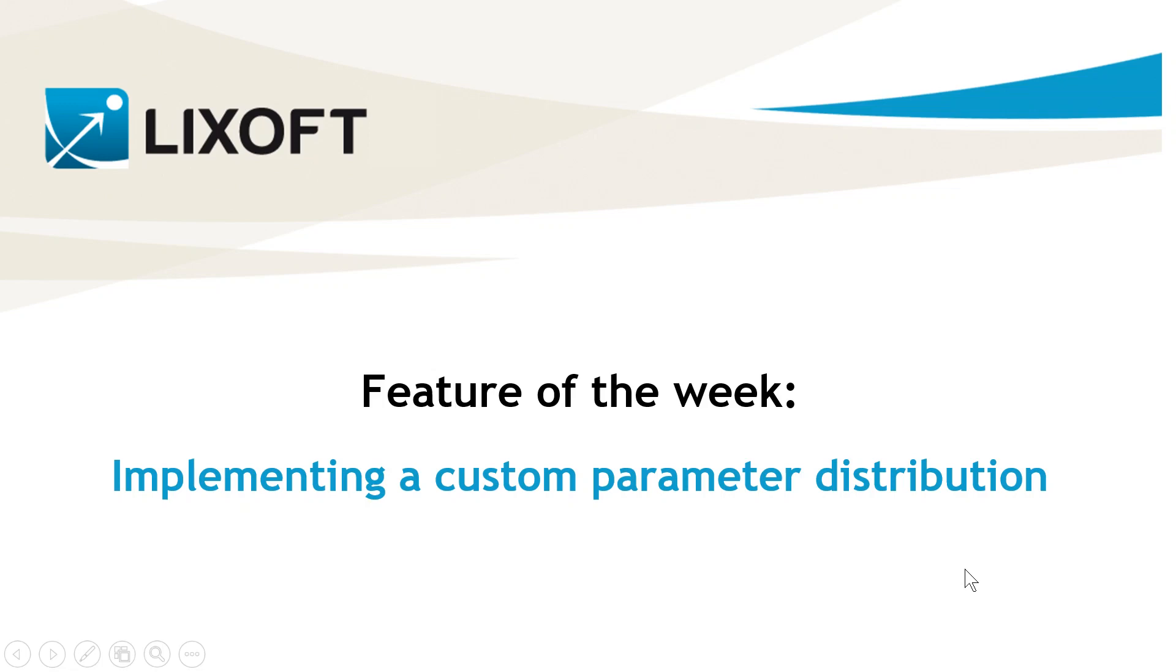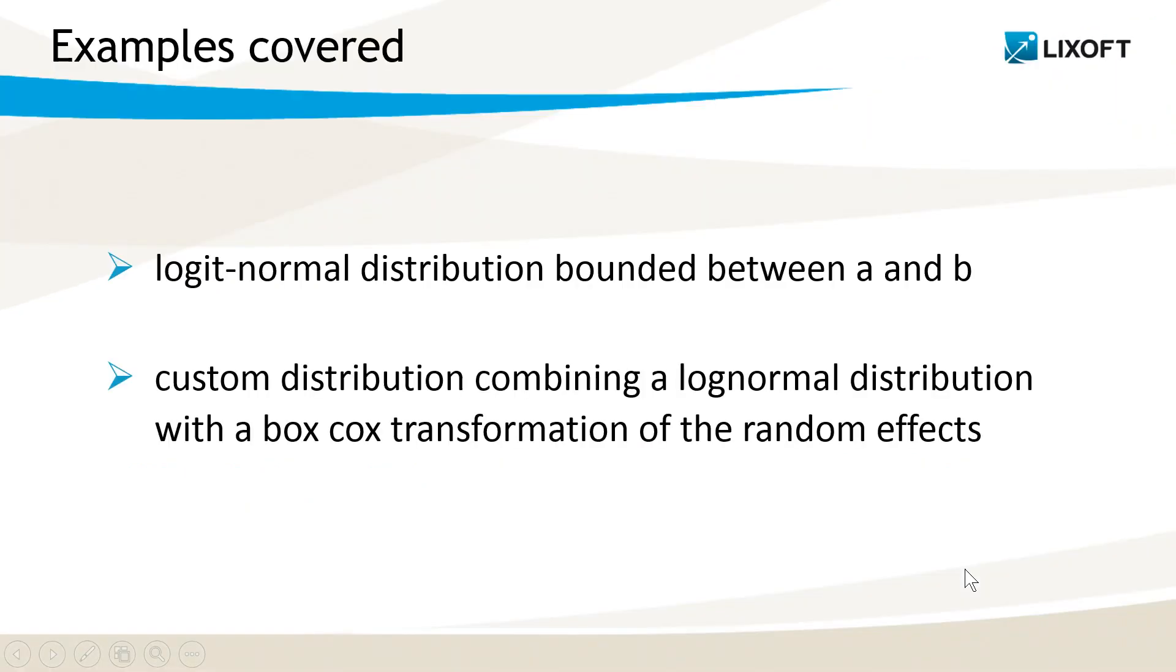But it may happen that more complex distributions are needed. In this video, I will cover two examples. First, a logit normal distribution bounded between two values different from 0 and 1, and a distribution that combines a lognormal distribution with the Box-Cox transformation of the random effect.